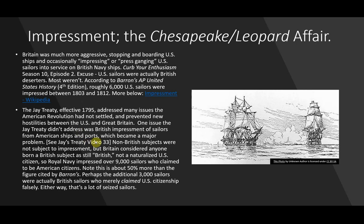Non-British subjects were not subject to impressment, but Britain considered anyone born a British subject as still British — not a naturalized U.S. citizen if they had settled in the United States. So the Royal Navy impressed over 9,000 sailors who claimed to be American citizens — roughly 50% more than the figure cited by Barron's. Perhaps the additional 3,000 were actually British sailors who merely claimed U.S. citizenship falsely.